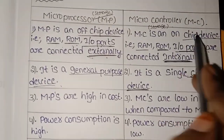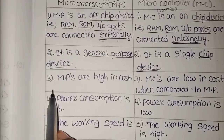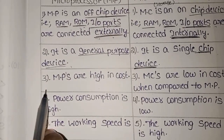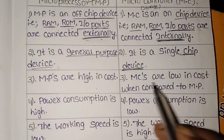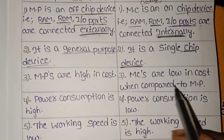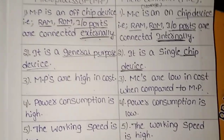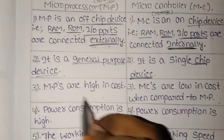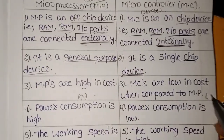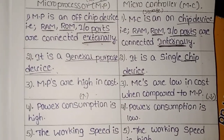Microprocessors are highest in cost. Microcontrollers are low in cost when compared to microprocessors. So the cost is high for microprocessors and low for microcontrollers.